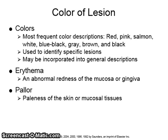Lesion colors are extremely important to note. The most frequently used color descriptions are red, pink, salmon, white, blue-black, gray, brown, and black. Erythema is a form of a red lesion, which is an abnormal redness of the mucosa or gingiva. Pallor is another way of saying pale, and describes pale-looking skin or mucosa. The color is used to identify specific lesions and may be incorporated into general descriptions.